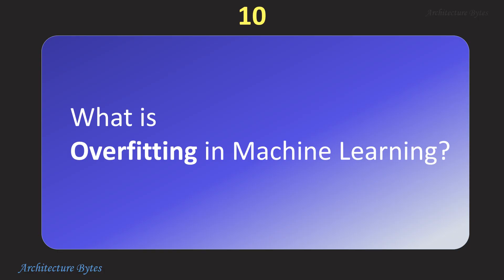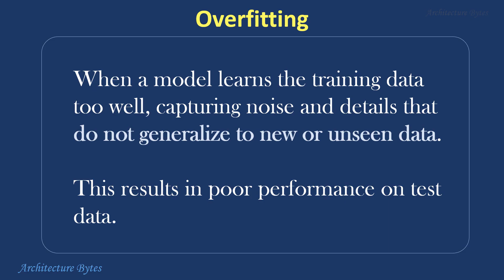What is overfitting in machine learning? Overfitting occurs when a model learns the training data too well, capturing noise and details that do not generalize to new or unseen data. This results in poor performance on test data. To mitigate overfitting, you can use techniques such as cross-validation, regularization, dropout, early stopping, data augmentation, and simplifying the model.